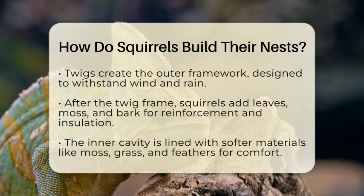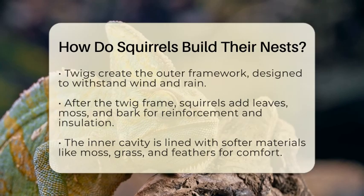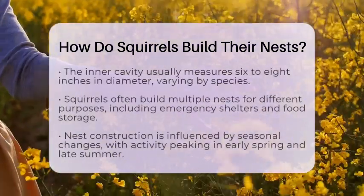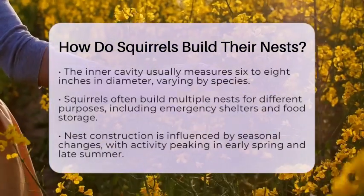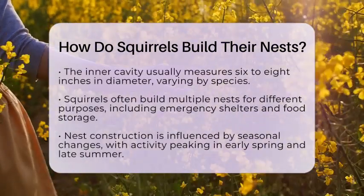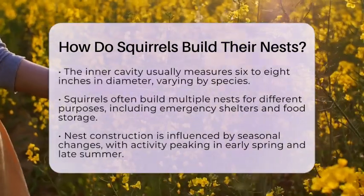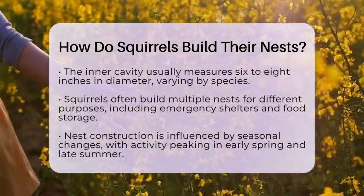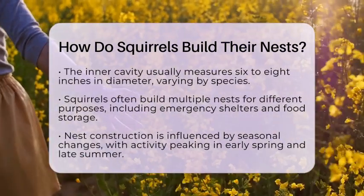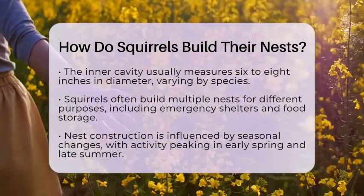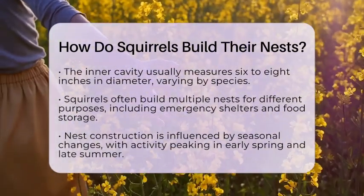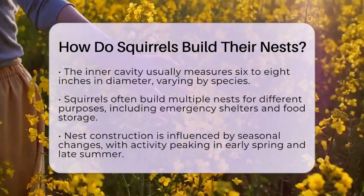The inner cavity of a squirrel's nest usually measures around six to eight inches in diameter, but it can be larger depending on the species. Interestingly, squirrels often build multiple nests within their territory. These secondary nests serve various purposes, such as emergency shelters from predators or temporary resting spots.